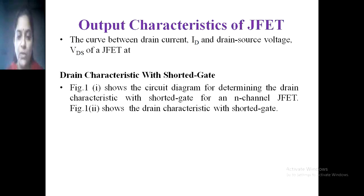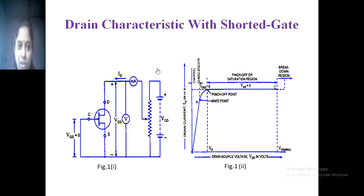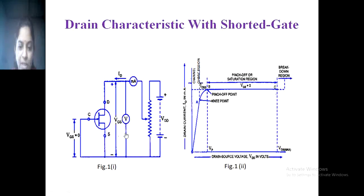Figure 2 shows the drain characteristics with shorted gate. The circuit diagram shows the characteristics of the N-channel JFET when the gate is shorted, with VGS equal to zero. VDS is applied at the output of the circuit and across this load we measure the drain current ID.